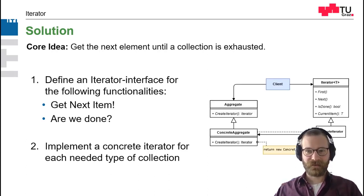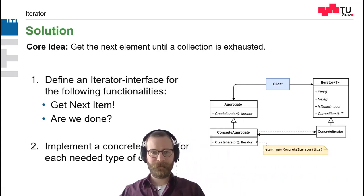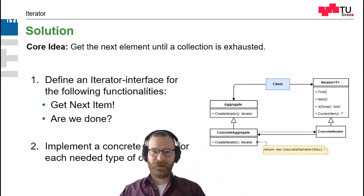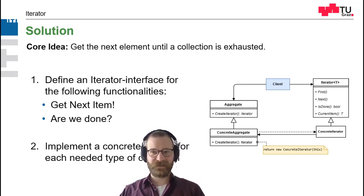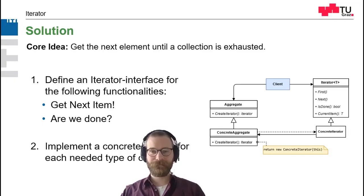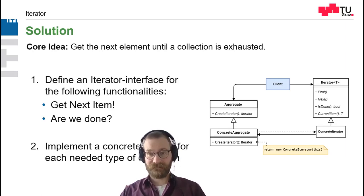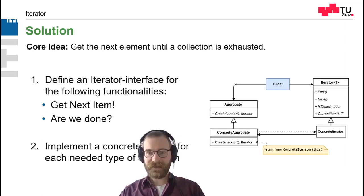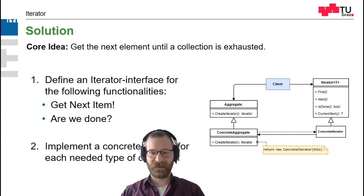If we draw it as a diagram, it can look like this. We have this iterator interface which defines four methods: first, next, is done, and current item. First returns the first element of the list. Next returns the next one. Is done tells me if the list is finished or not. And current item gives me the current item — it doesn't advance the list, it just gives me the current item.